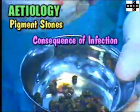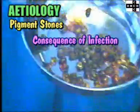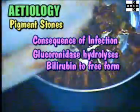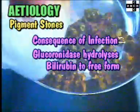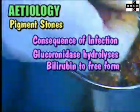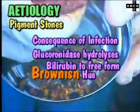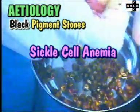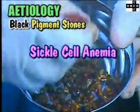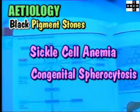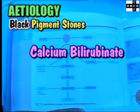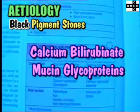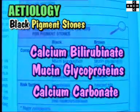The pigment stones are a consequence of bacterial or parasitic infection of the biliary tree. Bacterial glucuronidase hydrolyses conjugated bilirubin to its free form, which then precipitates. These stones have a brownish hue. Black pigment stones are found in hemolytic conditions like sickle cell anemia or congenital spherocytosis. They are composed of calcium bilirubinate and a network of mucin glycoproteins that interlace with salts such as calcium carbonate.